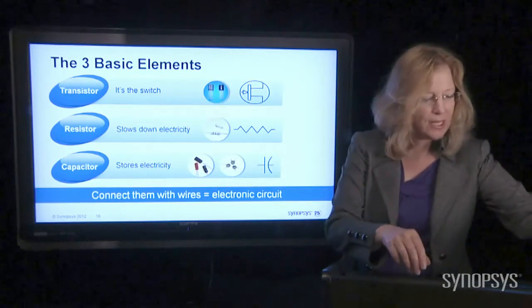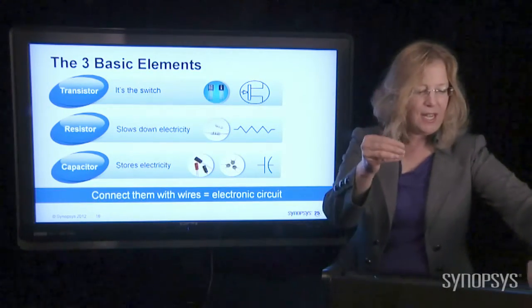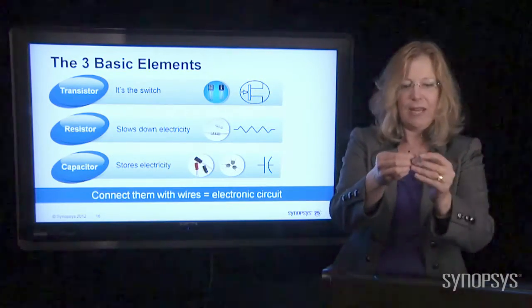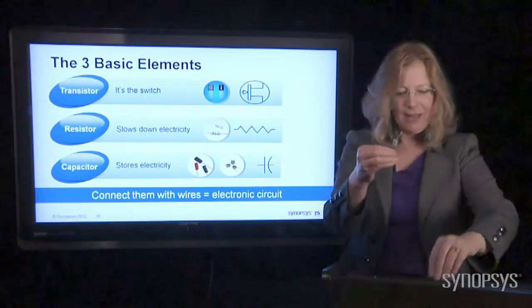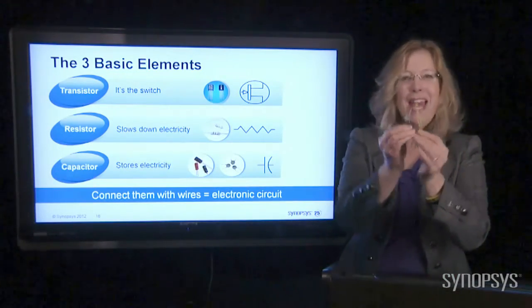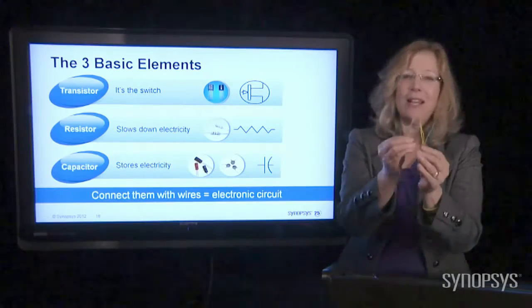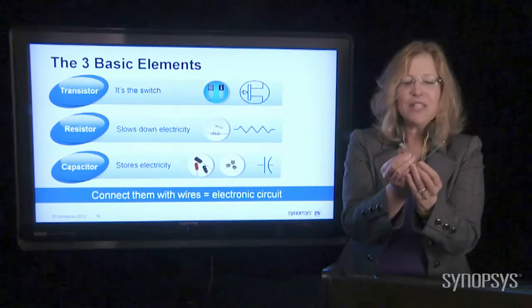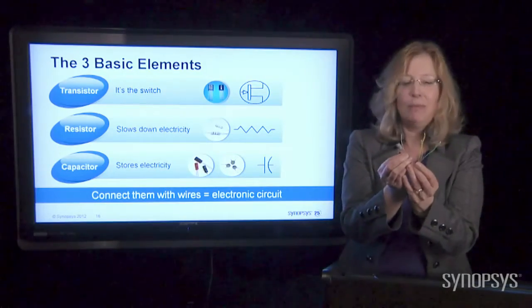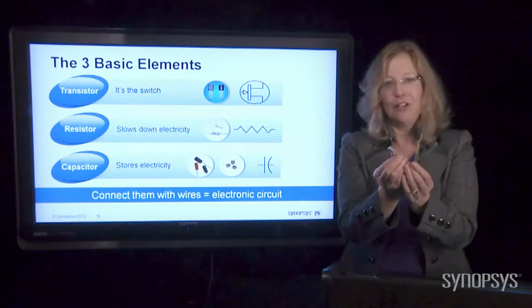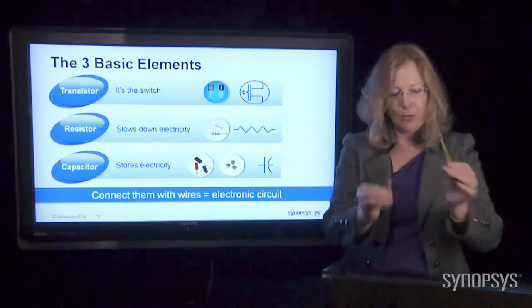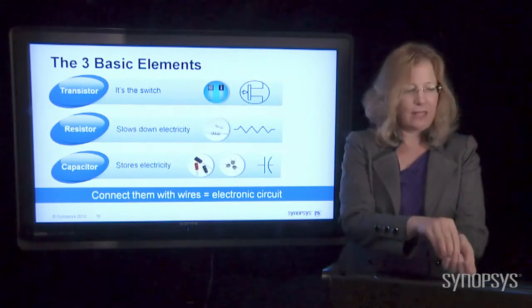All right. You take those three parts, a little transistor and a little resistor and a capacitor, and you hook them all up together with wires. Very high-tech. Hook them up. And now you have some type of an electronic circuit. This could be inside your Kindle, inside your car, inside your computer, inside your microwave. But these are the three elements connected with wires that make up a basic computer chip.